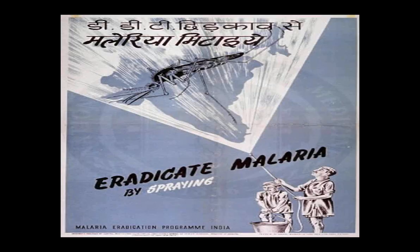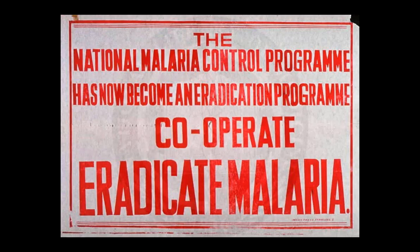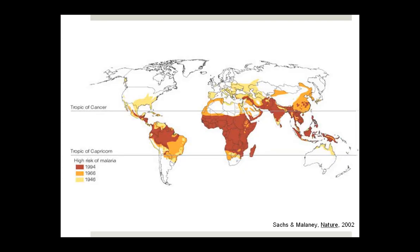The success of spraying using DDT, plus the fear that resistance would emerge among Anopheles mosquitoes, led the World Health Assembly to pass in 1955 the Global Malaria Eradication Program, which aimed to eliminate malaria across the globe. As we now know, that did not work. The areas that were unprotected saw malaria continue. This was a major embarrassment within WHO, and after 1969 when the plug was pulled on eradication, there was a shift back to a different approach.